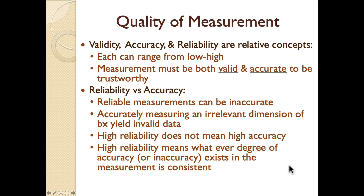Validity, accuracy, and reliability are relative concepts — they range on a continuum from low to high, and we're always striving for high validity, accuracy, and reliability. When we have high validity, accuracy, and reliability, our data are more trustworthy. That's important not only for research — where you have to have trustworthy data to be published — but also in practice. If we're making clinical judgments based on data, whether to change an intervention, select a new intervention, or do anything related to treatment programming, we want to be confident that the data we're using to make those decisions are accurate.